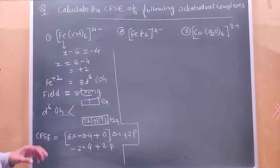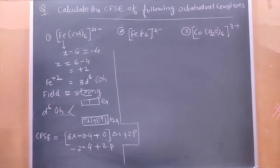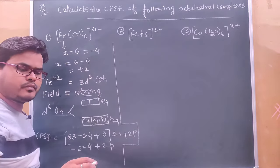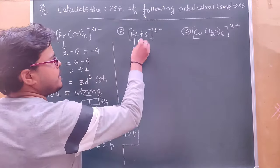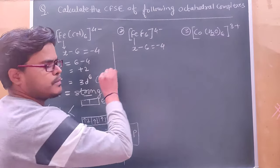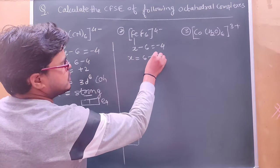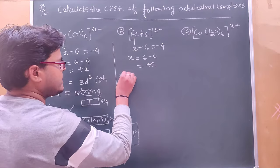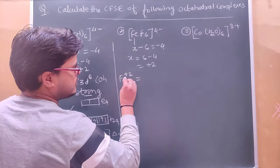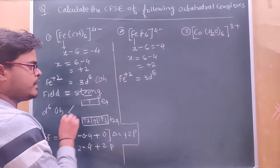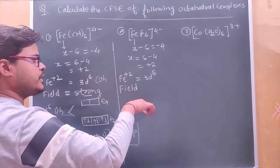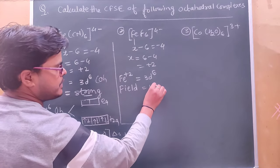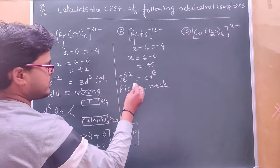पहले का solution नोट करिए, फिर दूसरे में चलते हैं। दूसरा condition: यहाँ पर iron का फिर से x - 6 = -4, x = +2। Iron +2 oxidation state में आया, तो फिर से 3d6 configuration। Field check करते हैं: metal iron है, 3d है। Oxidation state +2, यानी 3 से कम है। Ligand weak है, तो field weak होगा।